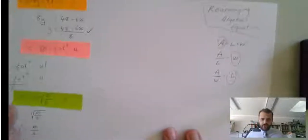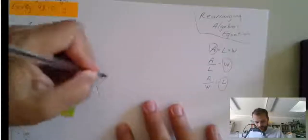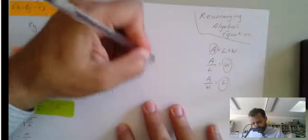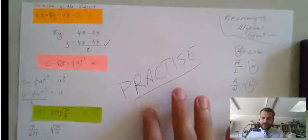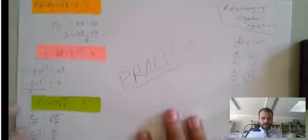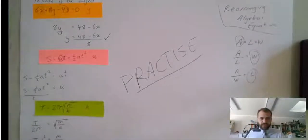Alright, Rearranging Algebraic Equations. The key to solving these: Practice. You've just got to practice these over and over again. You've got to look for as many different types of these questions as you can, and just try them. Alright, good luck.